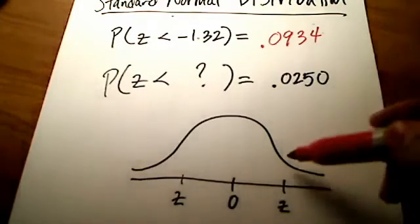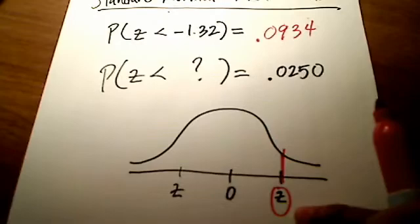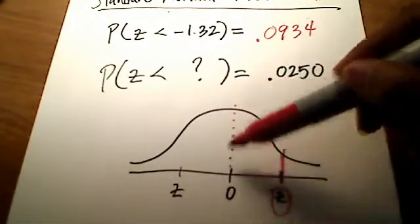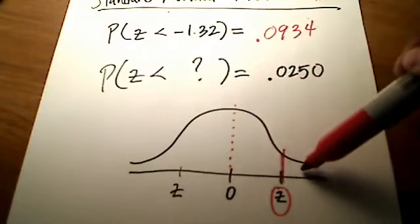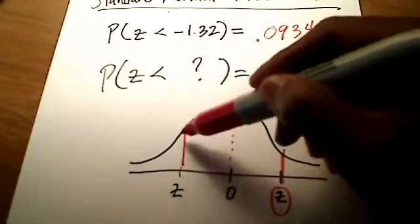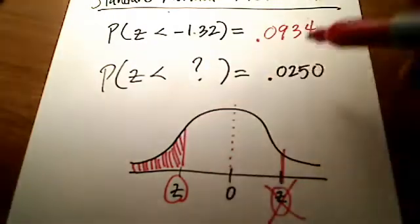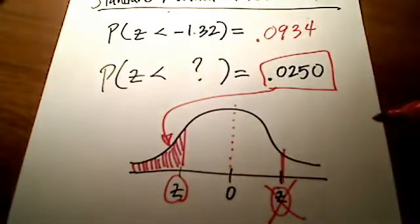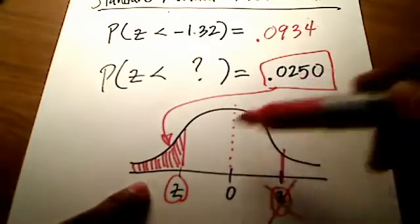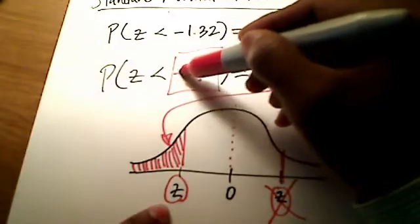Think about that for just a second. If I shade to the left of this thing right here, this would give me a positive z-number — it's to the right of 0 — and shading to the left of that gives a lot of area, more than half. Since the curve is symmetrical, half the area is on each side of 0. But 0.0250 is less than half, so I must be looking for a z-score that is negative. When I'm done and I stick it in there, it's going to be a negative something.